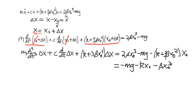After shifting terms to the right-hand side and combining, the forcing function becomes negative mg minus K*X-naught minus beta*X-naught³. We recognize there's still an equilibrium term hanging around — we have mg and the negative quantity K*X-naught plus beta*X-naught³, which is the nonlinear spring function evaluated at the operating point.